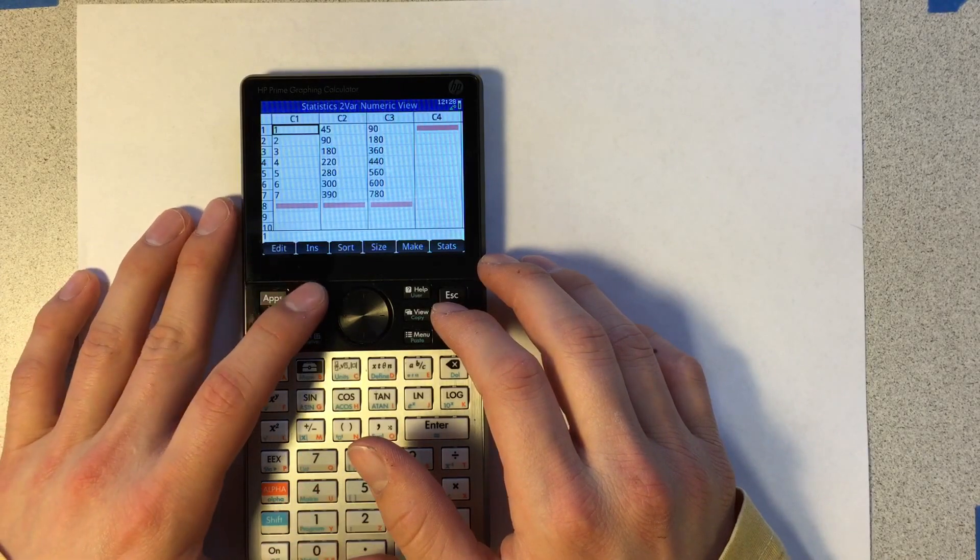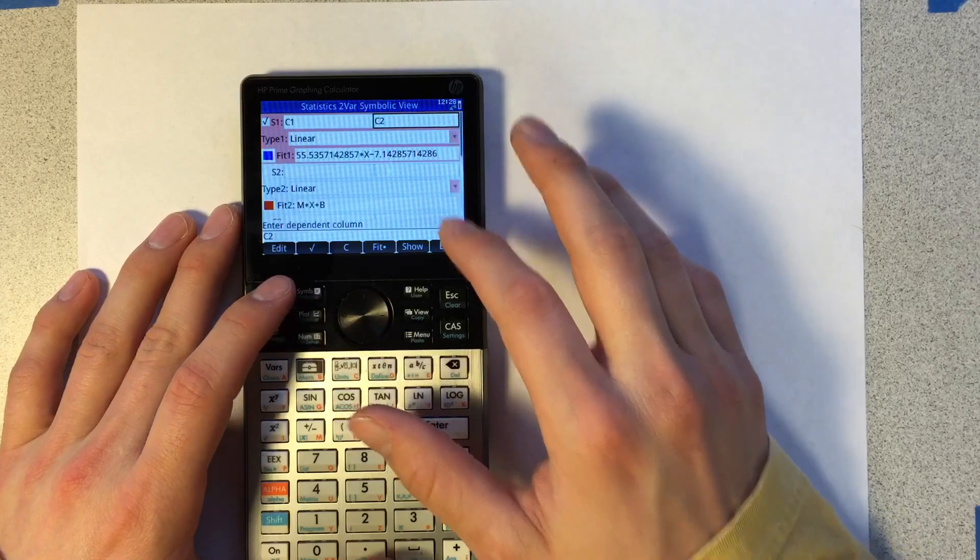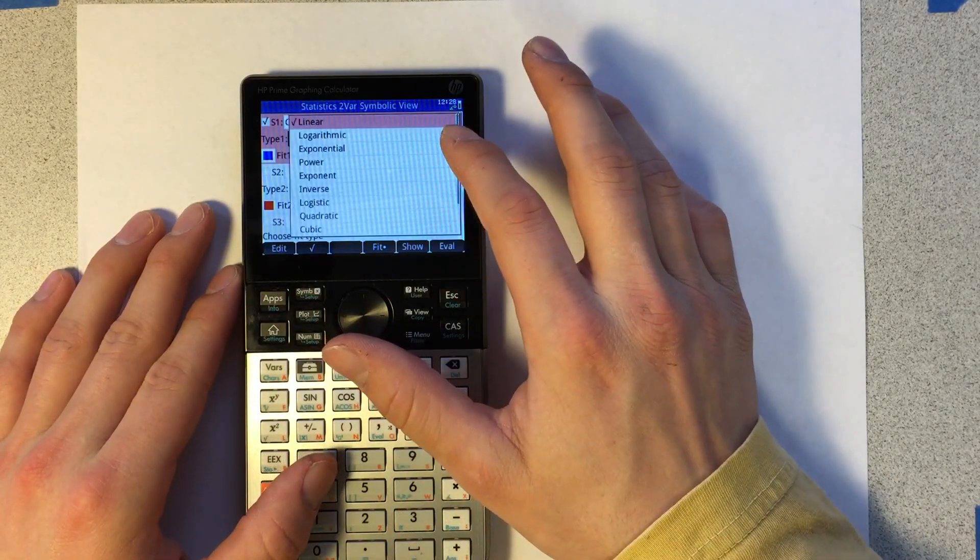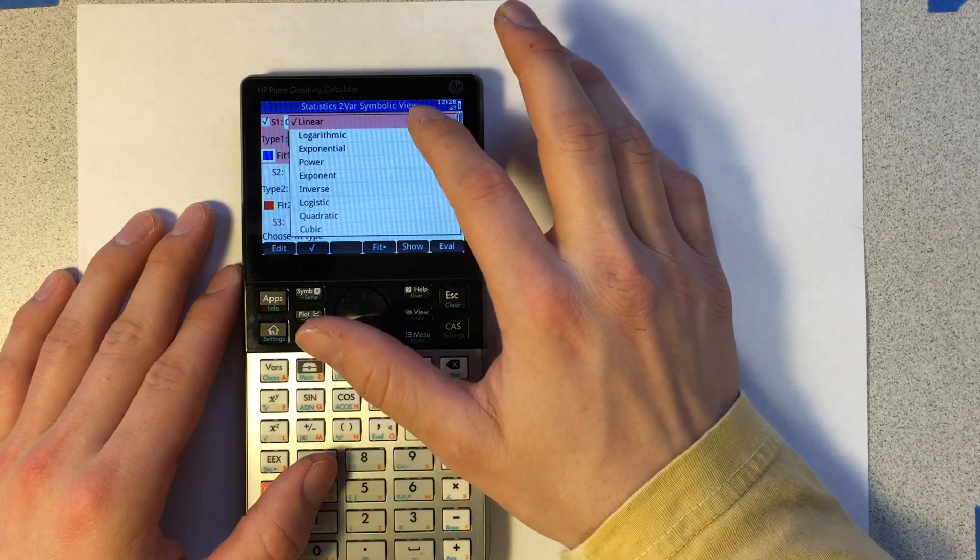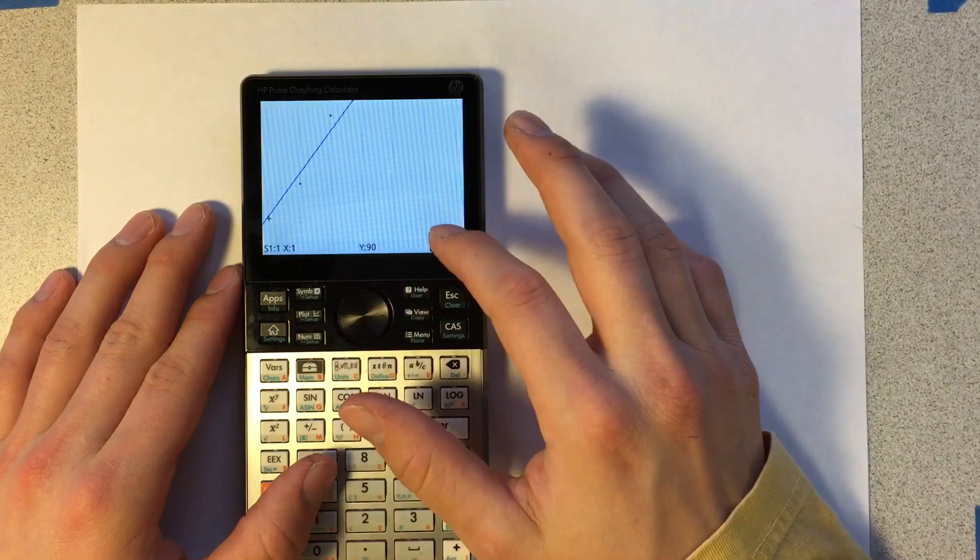Now what I want to do is I actually want to plot C1 versus C3, so I'm going to go over here and I'm going to change this from C2 to C3. So now that I have C3, let's start with a linear. It should plot it for us, there we go.